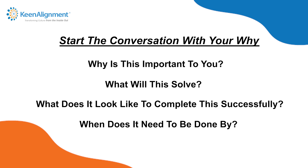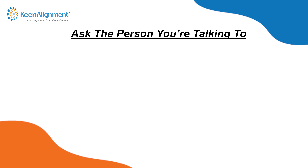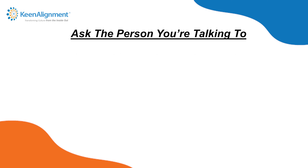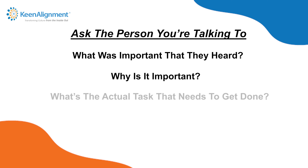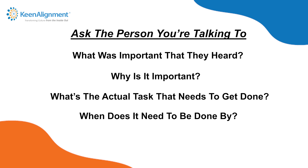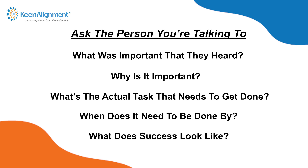Once your conversation is complete, ask the receiver — the person you're talking to — what they heard was important in the project, why it's important, what's the actual task that needs to get done, by when they understand it needs to be done, and what does success look like. This reiteration process allows you to close the loop and leave yourself and the other person empowered.